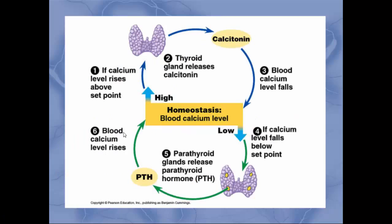Here's an image illustrating this balance: you always want blood calcium to be stable. When it gets too high, the thyroid secretes calcitonin to lower it back to normal. When calcium gets too low, the parathyroids secrete parathyroid hormone to raise it back. Calcitonin lowers blood calcium; PTH raises blood calcium — always maintaining a steady, stable level.